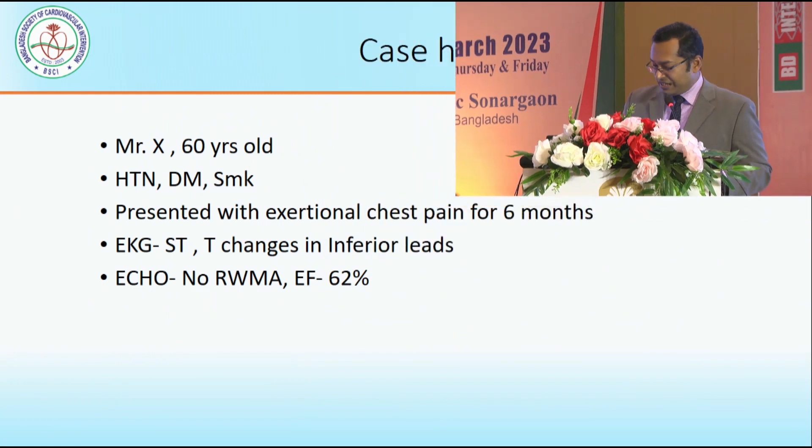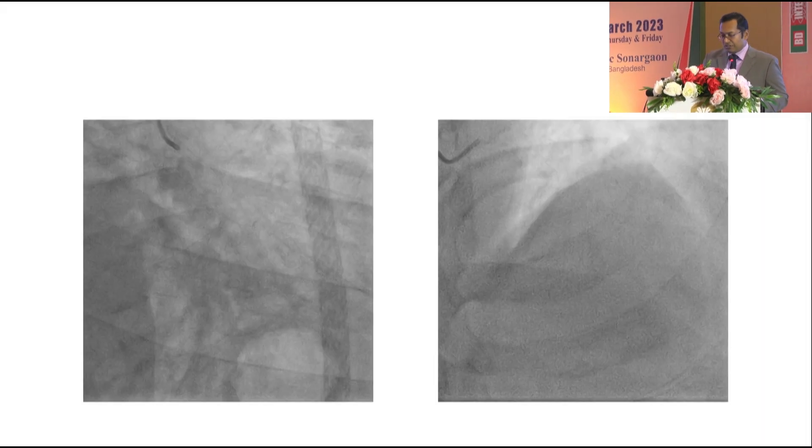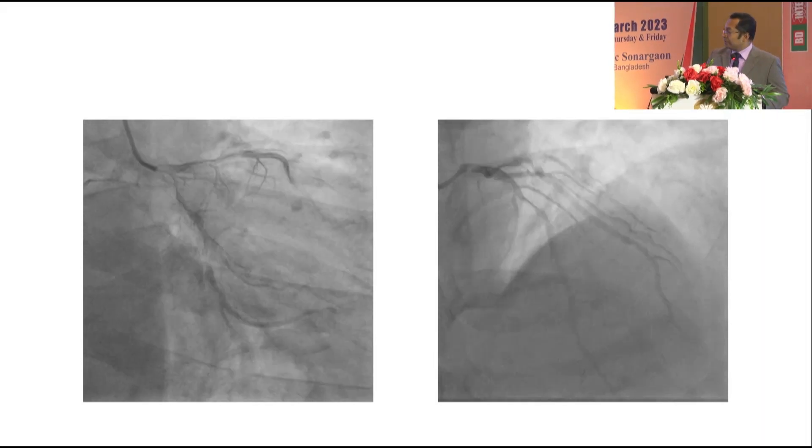My title is 'Nowhere to Escape.' Our patient, Mr. X, 60 years old, hypertensive diabetic smoker, presented with exertional chest pain for six months. His EKG showed ST-T change in inferior leads and echo was normal.